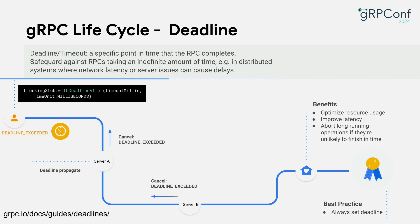Deadline exceeded is very common when the request never leaves the client — for example, when a TCP connection cannot be established by the load balancer. But when the request does leave the client, it carries the deadline information to the server. It is possible that when the server first receives the request, it already has a realistically small amount of time to finish, at which point it will cancel the call and propagate the deadline exceeded status code to the client. In a distributed application, the server is often also a client to a downstream service, and gRPC supports propagating the deadline from an incoming RPC to an outgoing one. There are many benefits to setting deadlines: you optimize resource usage, improve latency, and abort long-running operations unlikely to succeed. It is best practice to always set a deadline.